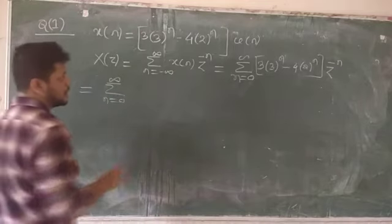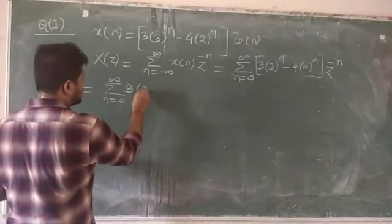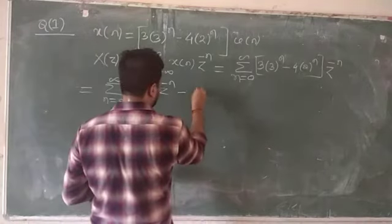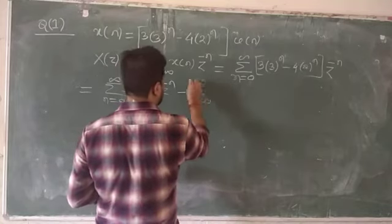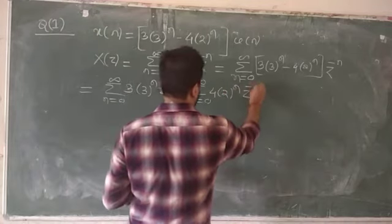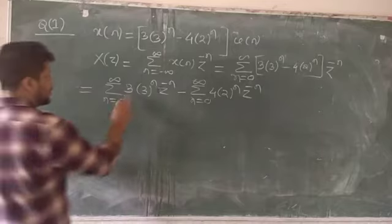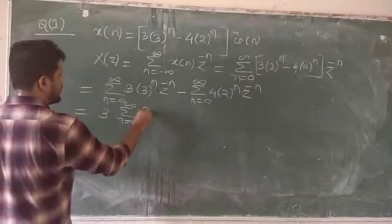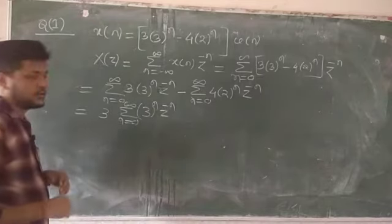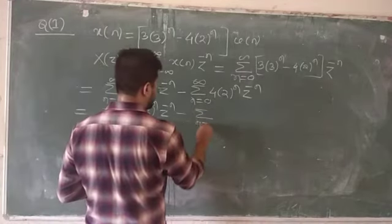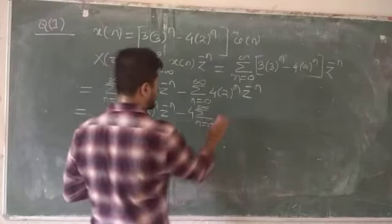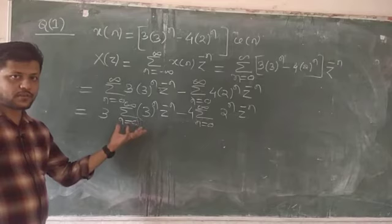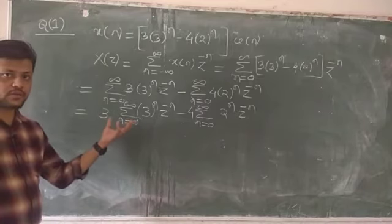Taking constants outside: 3·summation from n=0 to ∞ of 3^n·z^(−n), minus 4·summation from n=0 to ∞ of 2^n·z^(−n). We have already expanded this in the first example using the form a^n·u(n).